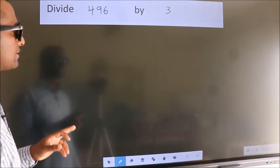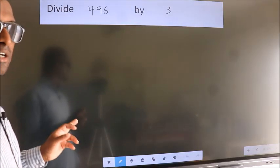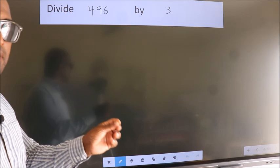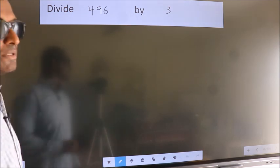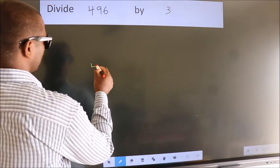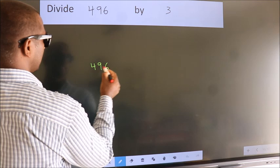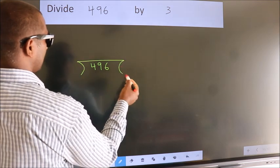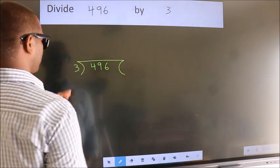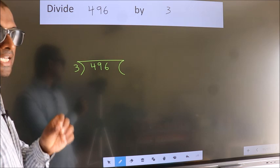Divide 496 by 3. To do this division, we should frame it in this way: 496 here, 3 here. This is your step 1.